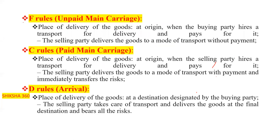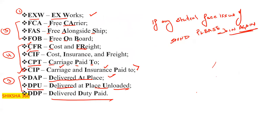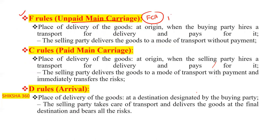The F rules — FCA, FAS, FOB — represent unpaid main carriage. The place of delivery is at the origin. Under these rules, the buyer hires a transport for delivery and pays for it. The seller delivers the goods to a mode of transport without payment — payment is to be done by the buying party, not the selling party.